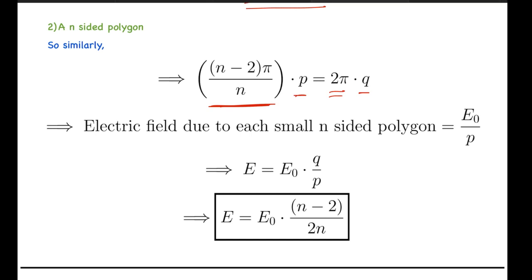And we can see from here that p n-sided polygons will be used and q layers will be formed. So the electric field due to each small n-sided polygon will be E₀/p. And again, as the layer will be divided into q parts, the charge density of each part will be 1/q, so we will have to take it q times.